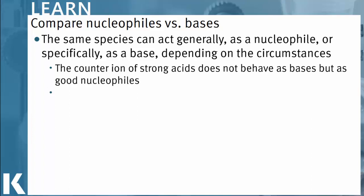The counter ion of strong acids will behave as a good nucleophile not as a good base. Recall that strong acids are ones that fully dissociate in solution and good examples of strong acids would be hydrochloric acid, hydrobromic acid and hydroiodic acids. Their counter ions would be chloride ions, bromide ions and iodide ions and these will all act as a good nucleophile.